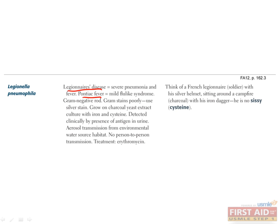Legionnaires' disease is a more severe, community-acquired pneumonia, presenting with high fever, nonproductive cough, headache, hyponatremia, and rapid deterioration to death without treatment. Legionnaires' disease should be treated with erythromycin, as the microbe contains beta-lactamases which make it resistant to penicillin.